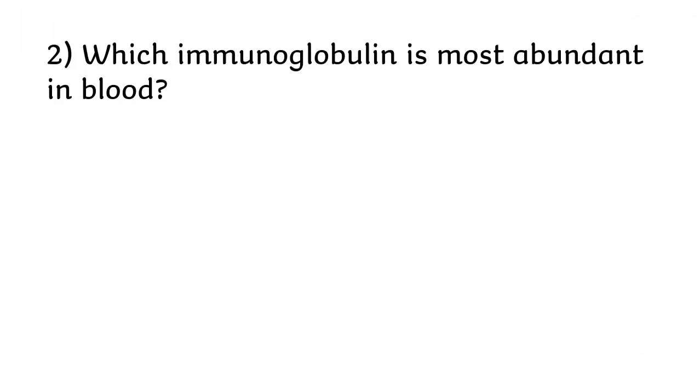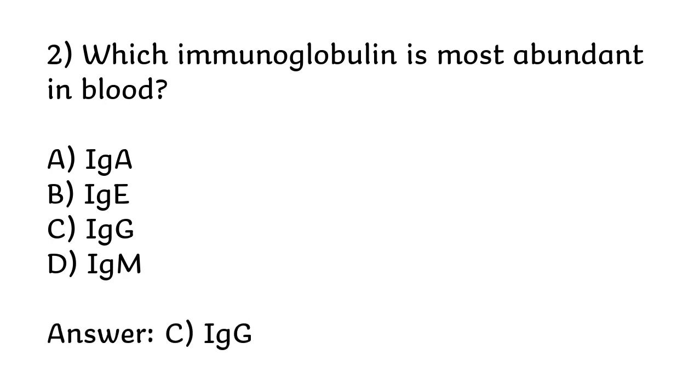Which immunoglobulin is most abundant in blood? IgA, IgE, IgG, or IgM. The correct answer is option C, IgG.